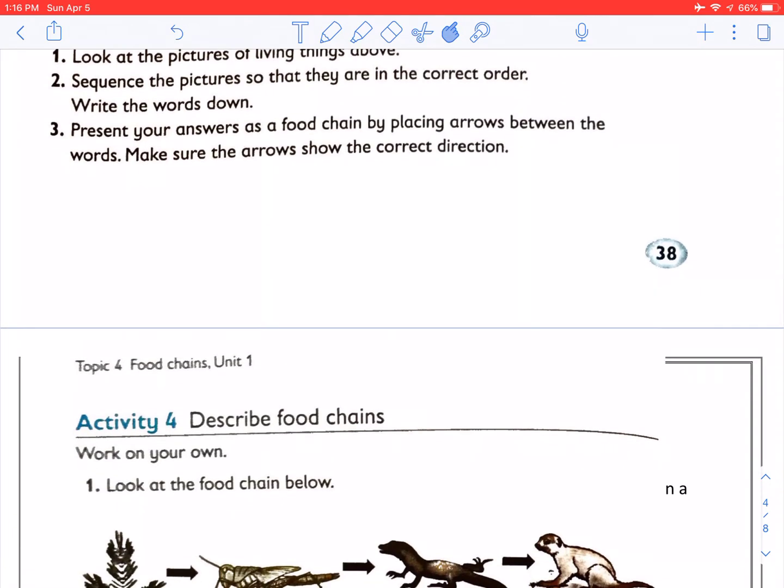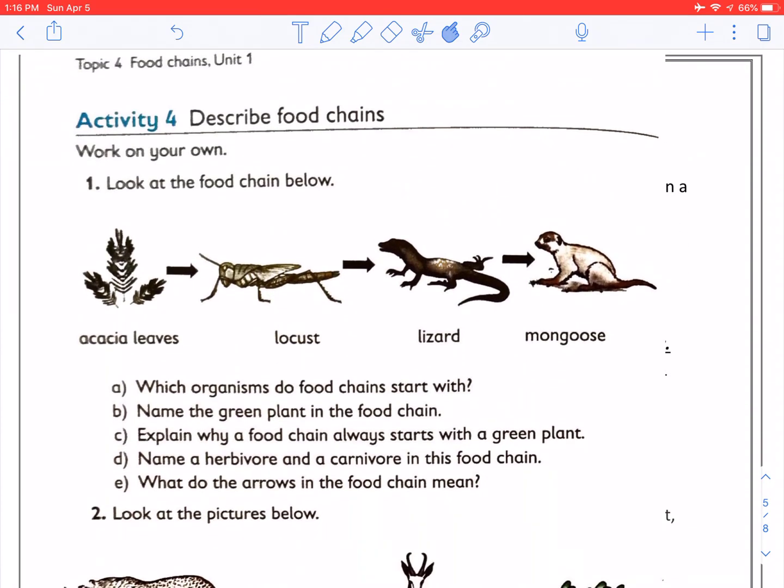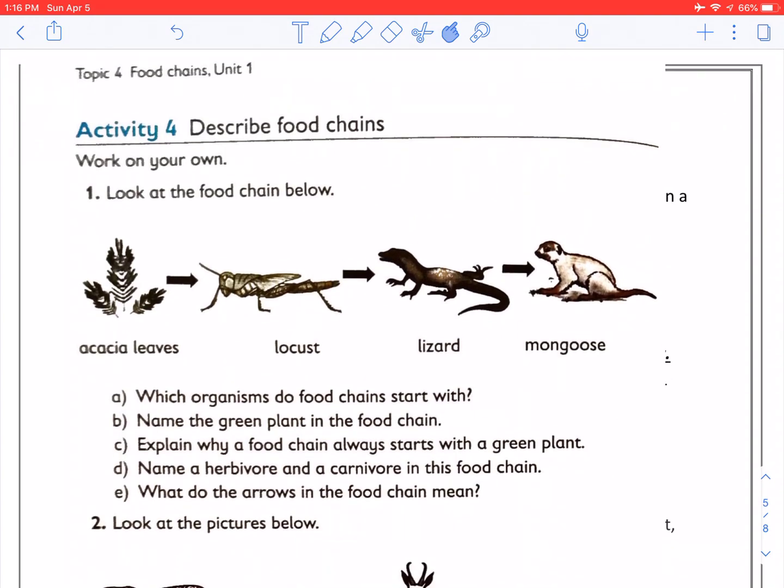Now we are going on to page 39. There is activity four there. Look at the food chain below. Which organisms do food chains start with? Name the green plant in the food chain. Explain why a food chain always starts with a green plant. Name a herbivore and a carnivore in the food chain. And what do the arrows in a food chain mean? Answer all these questions in your book.